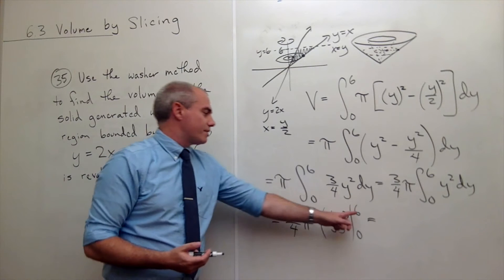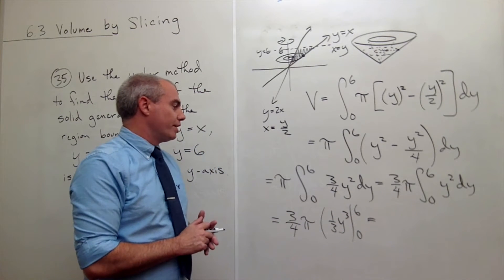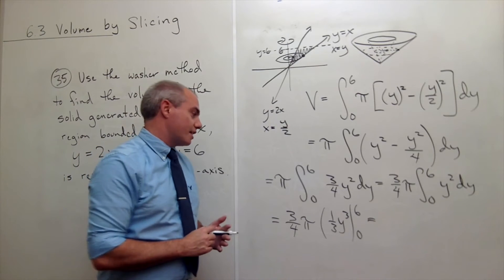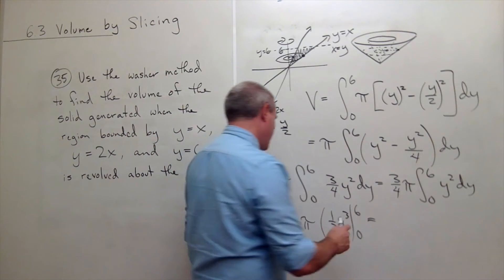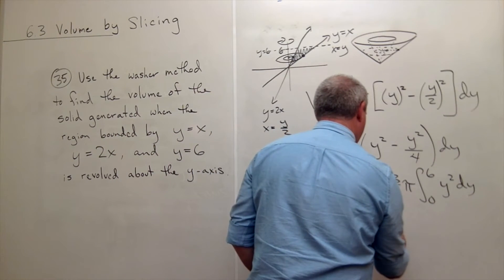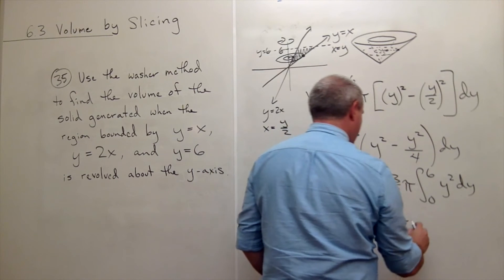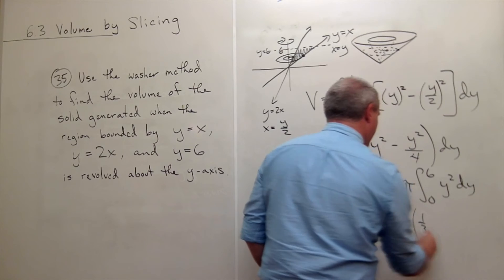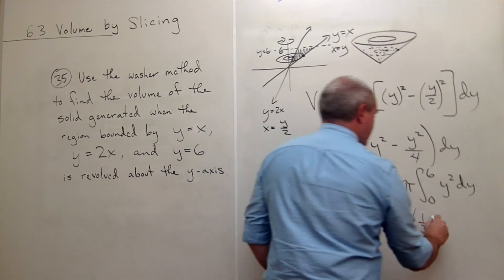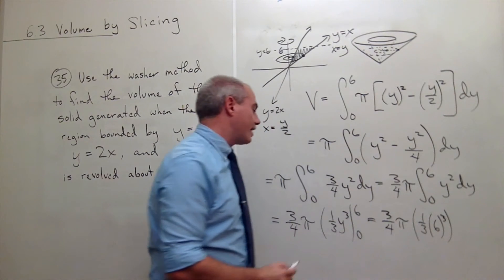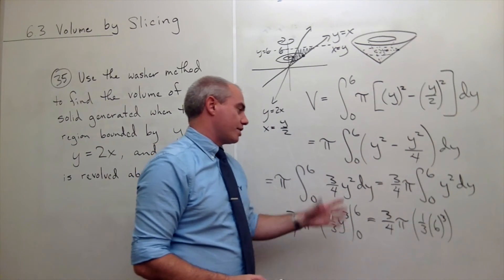And now I need to plug in the 6, I need to cube 6, right? So what is 6 times 6 times 6? We have 3 fourths pi times 1 third times 6 cubed. And then I plug in 0 and I get 0.